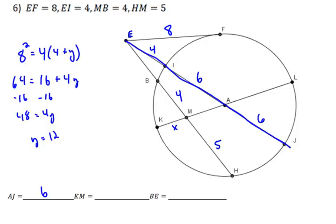We can also find EB in a similar way. We could say 8 squared equals EB, which is what we don't know, so it's going to be X times X plus 9. This is going to give us a quadratic equation, X squared plus 9X equals 64. So if I subtract 64, I get X squared plus 9X minus 64 equals 0.